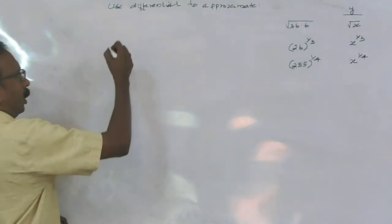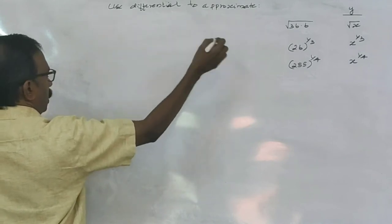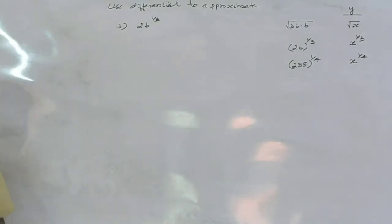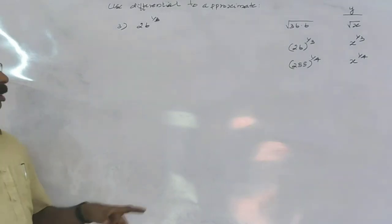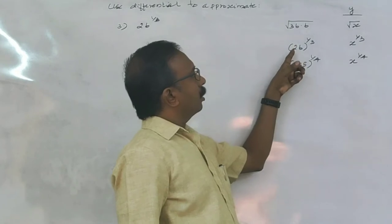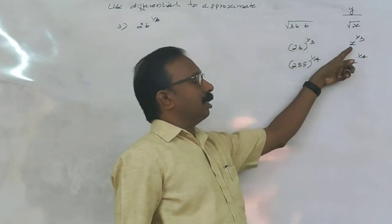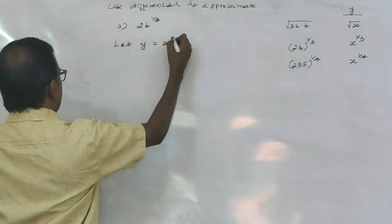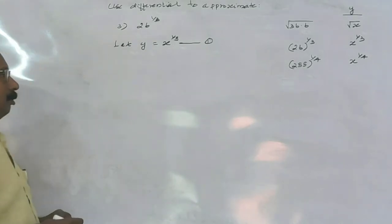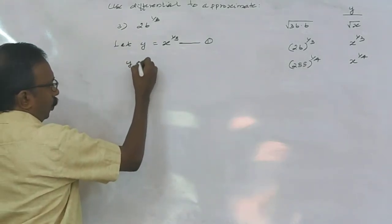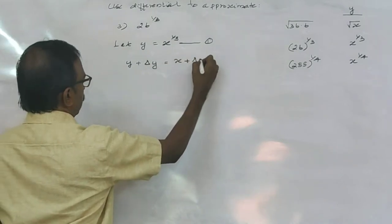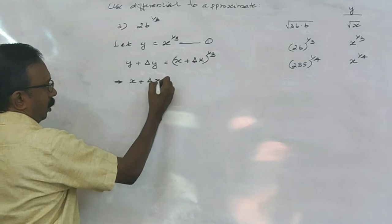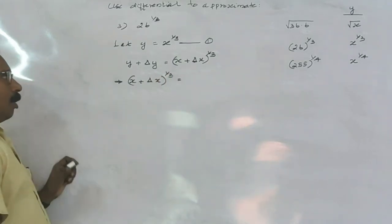Another question: find the approximate value of 26 raised to 1/3. Here the function is y equals x raised to 1/3. This is equation number 1. So y plus delta y equals (x plus delta x) raised to 1/3, or x plus delta x all raised to 1/3 equals y plus delta y.